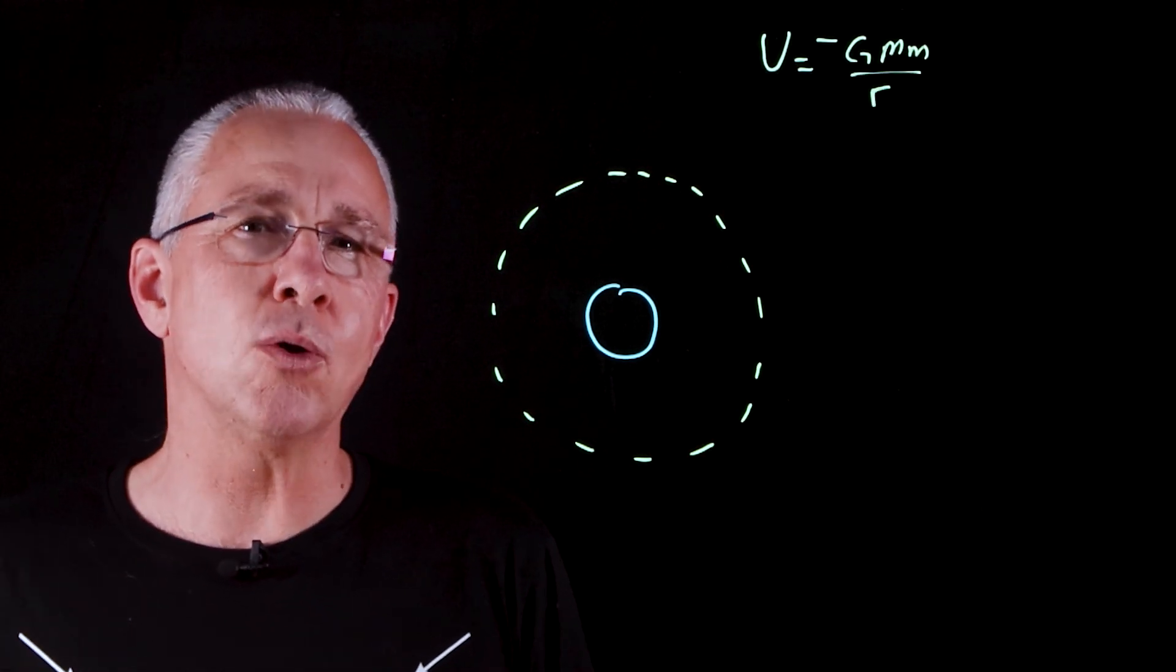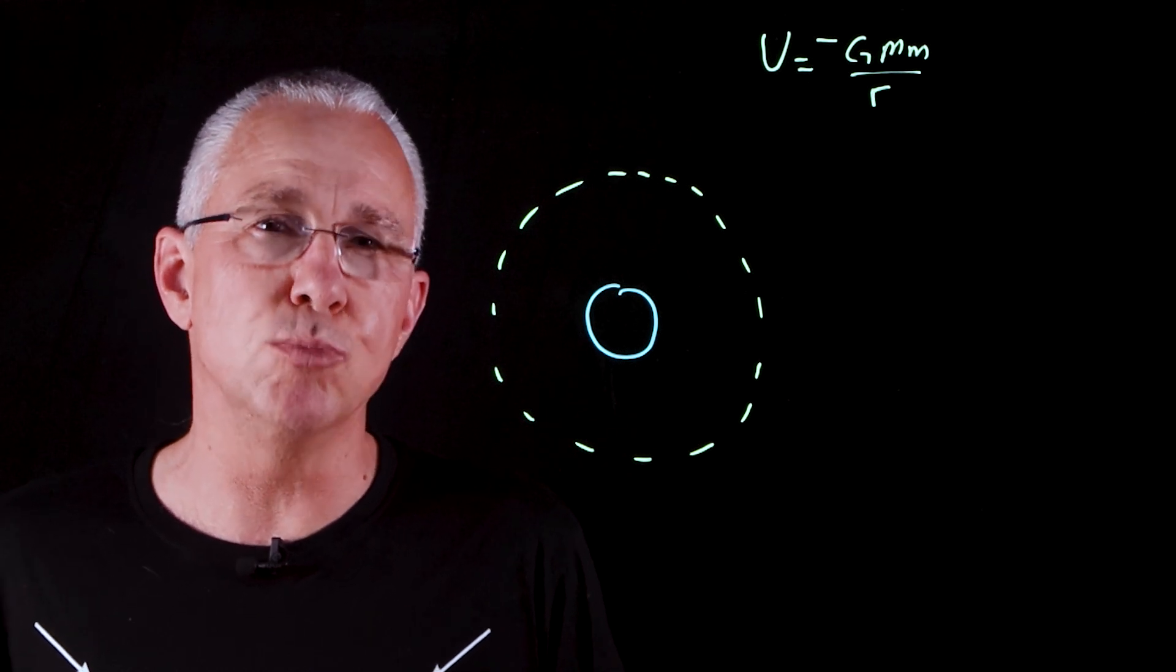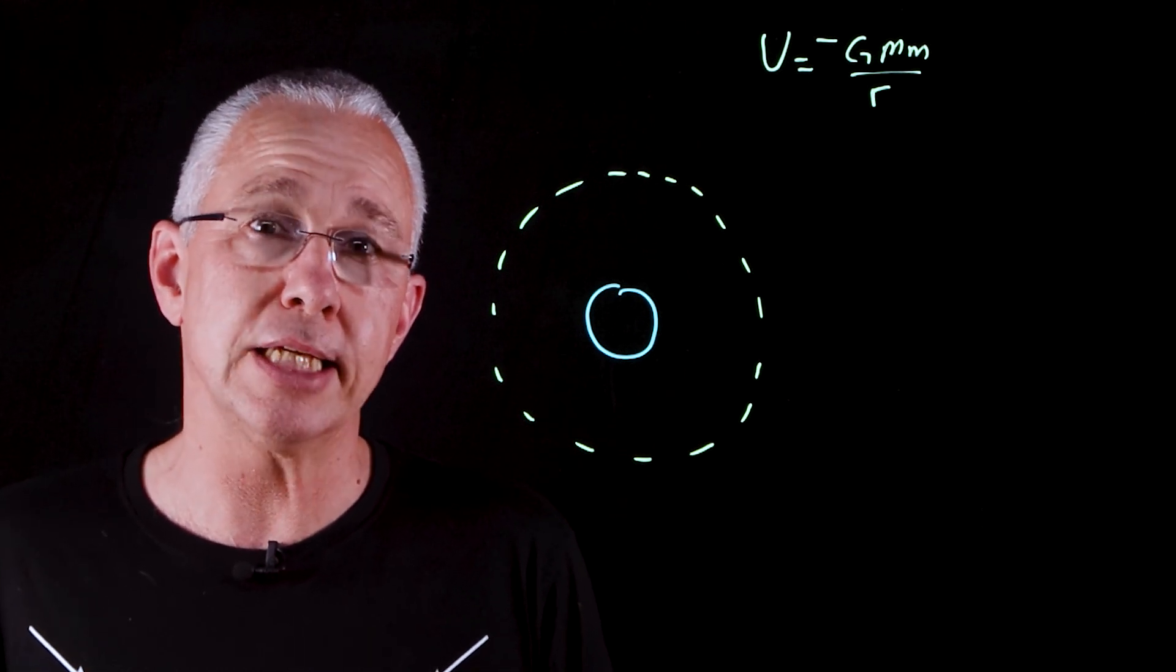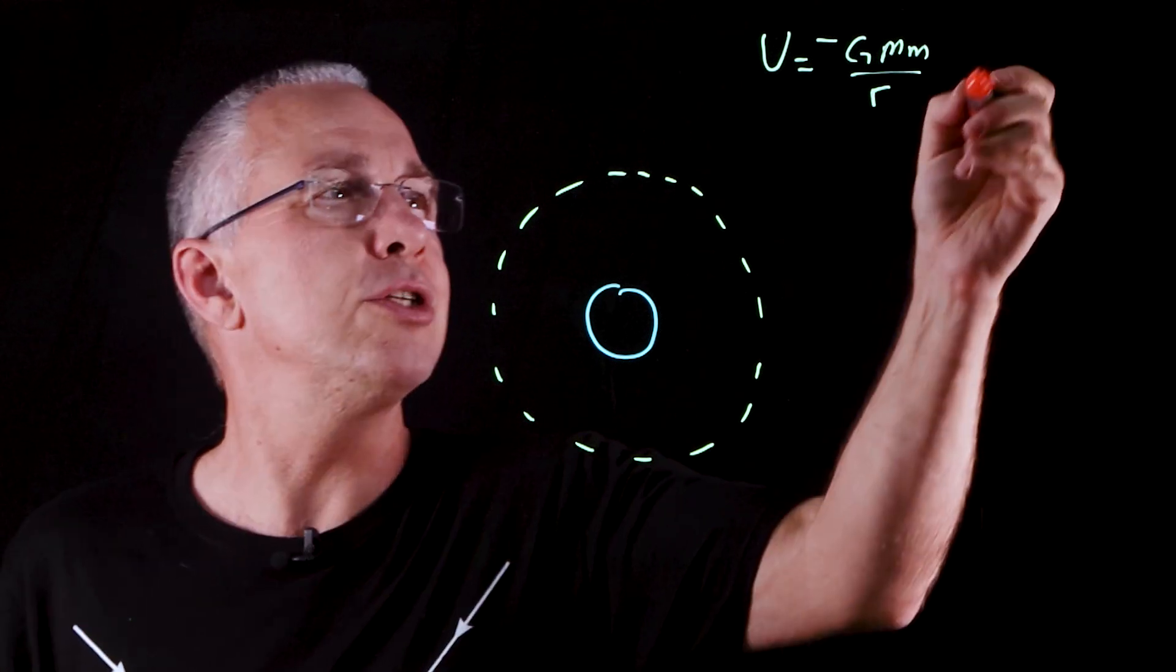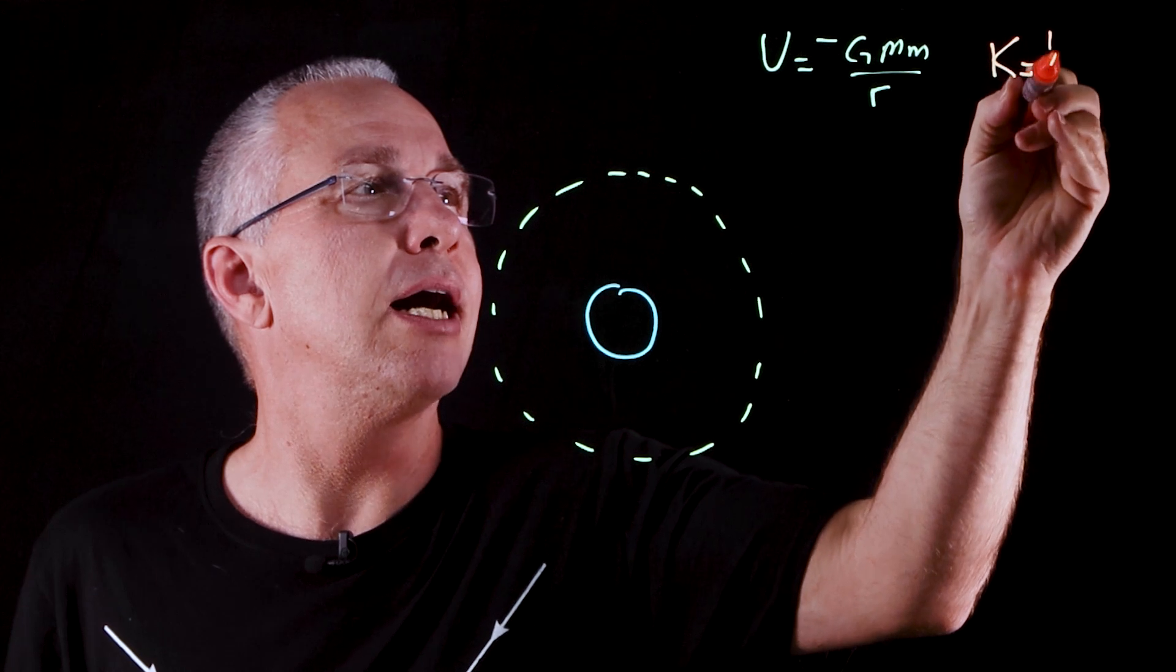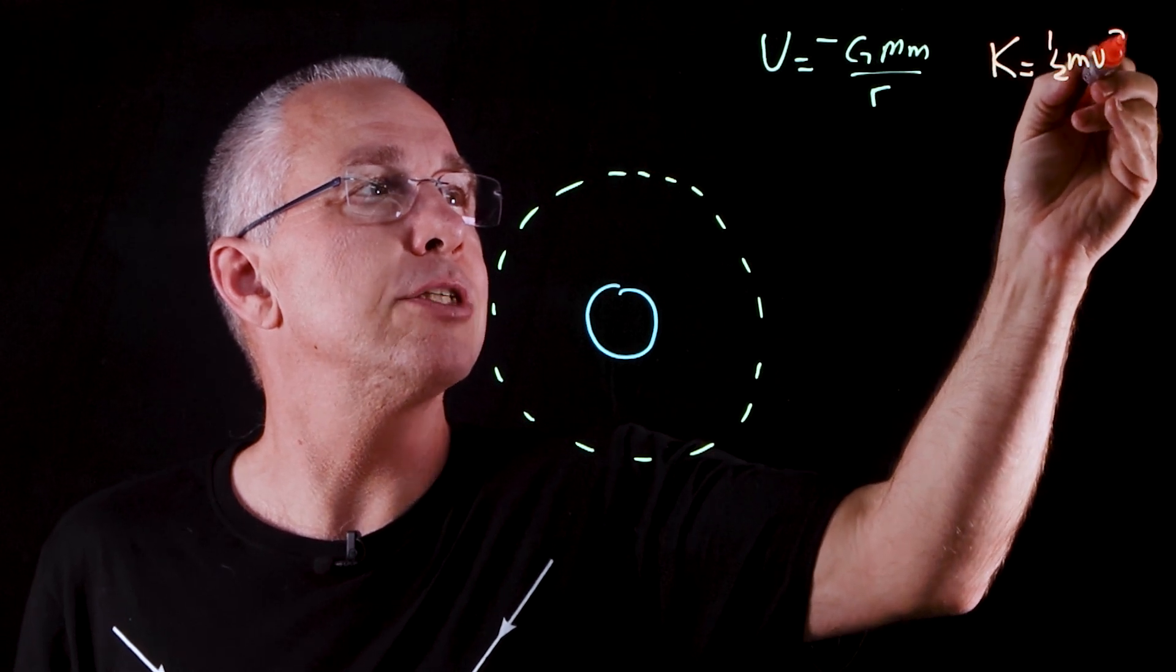But the satellite is also in orbit and it's moving, and so it also has kinetic energy. And the kinetic energy in this case is simply the kinetic energy formula, which is equal to simply a half m v squared.